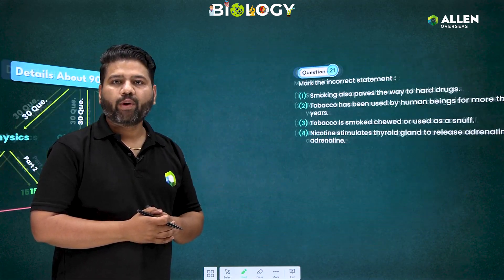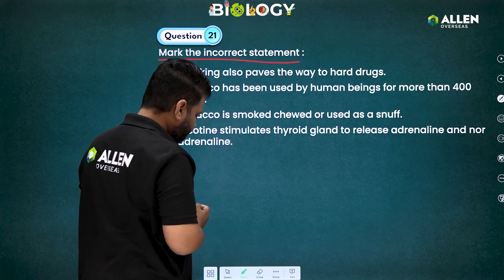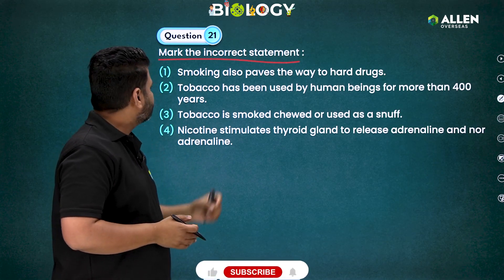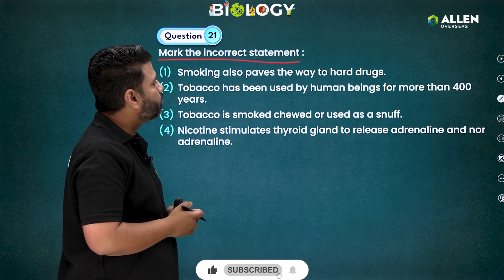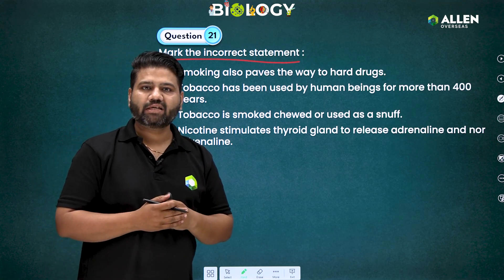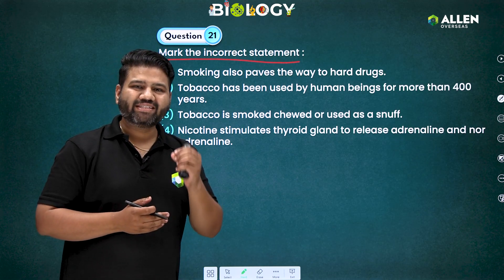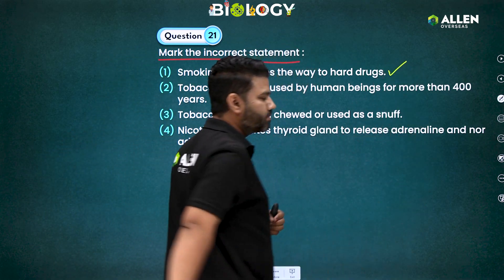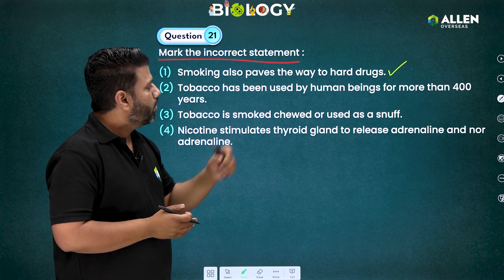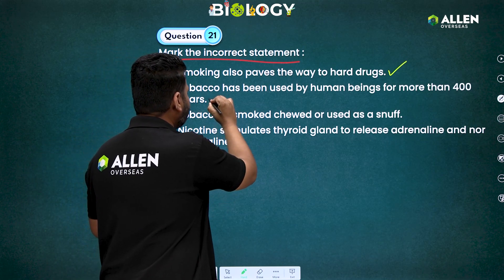Let's start with question number 21. Mark the incorrect statement. The first statement is: smoking also paves the way to hard drugs. This is a direct line from NCERT, meaning a person who starts smoking may slowly indulge himself in taking drugs, so this statement is correct. The second statement says tobacco has been used by human beings for more than 400 years — again a direct line from NCERT, so this statement is also correct.